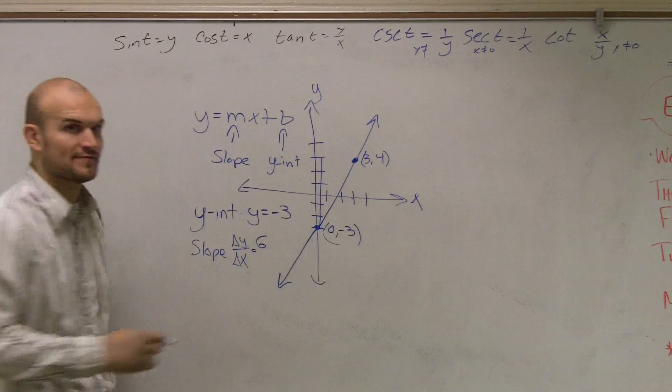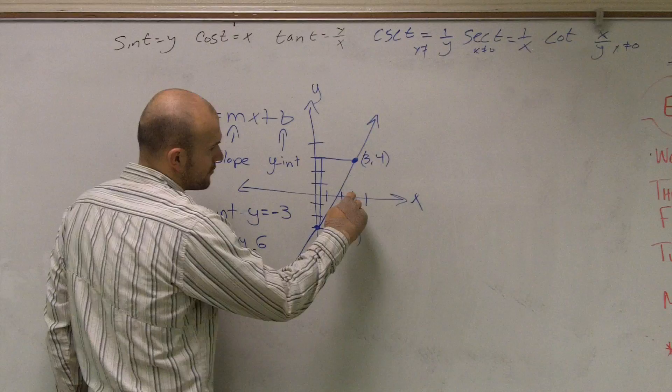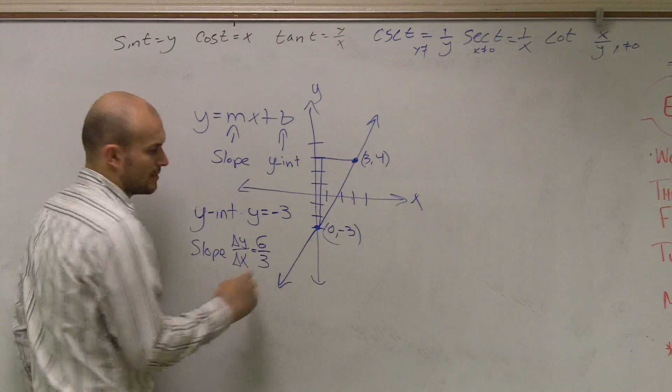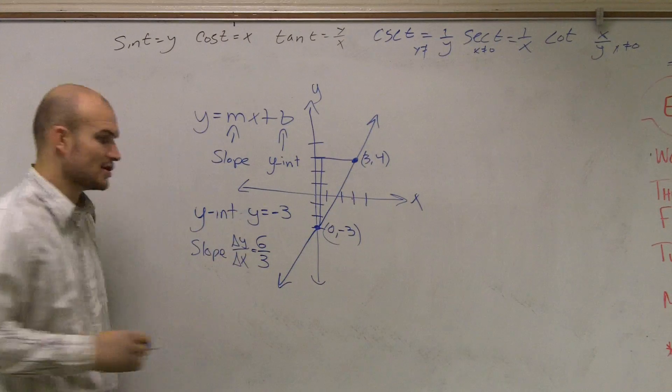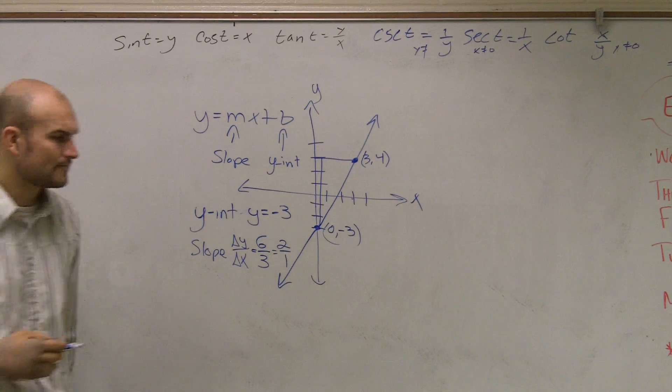Then how far over do I have to go? Well, 1, 2, 3. And then I could reduce 6 thirds to write me as 2 over 1 or 2, alright?